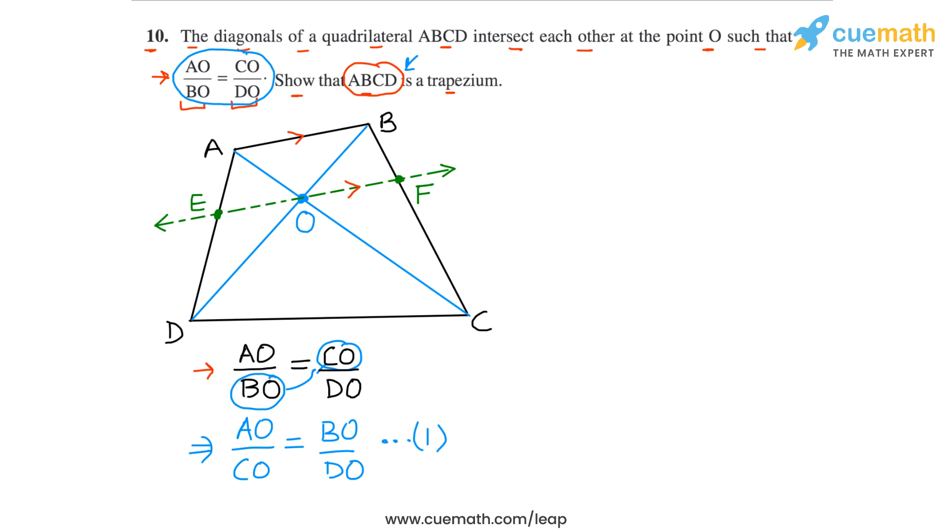Now we will consider the triangle ABC. In this triangle we can apply the basic proportionality theorem because OF will be parallel to AB. So we can apply the basic proportionality theorem and using that we can say that AO by CO will be equal to BF by CF.